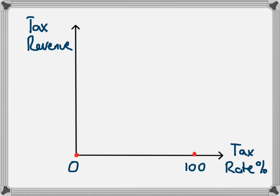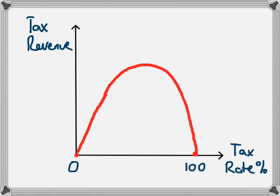At early rates of tax, as the tax rate rises, the revenue received by the government will also rise. But we know at the end it's going to end up back at zero, so at some point it's going to start flattening out and turning back down. And so the Laffer Curve is going to look like this upside-down semicircle.